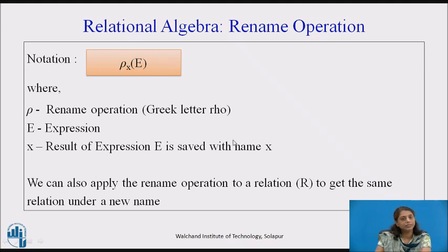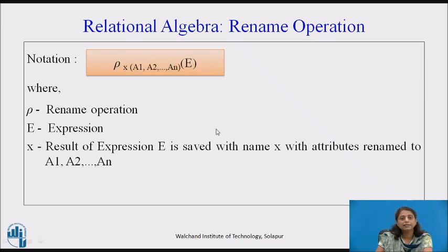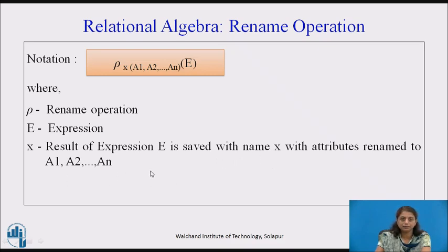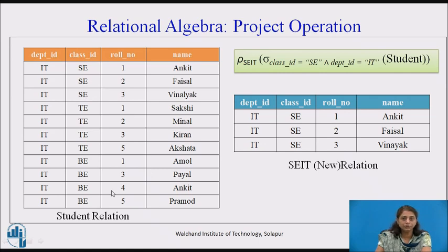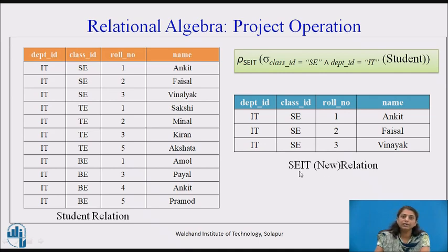We can also rename a relation with the rename operator when we want to use the same relation twice or more in a process. The second form of the rename operation is rho subscript X(A1, A2, ..., An) of E, which renames both the relation and its attributes. For example: rename the result of selecting class ID equals SE and department ID equals IT from student as SEIT. The output is the same relation, now referred to as SEIT.